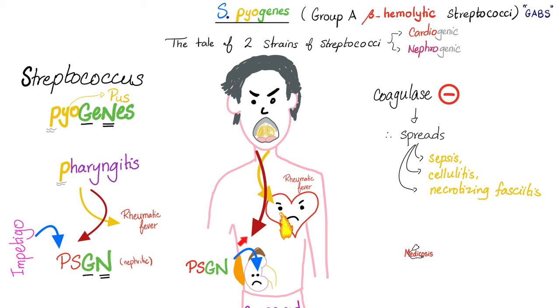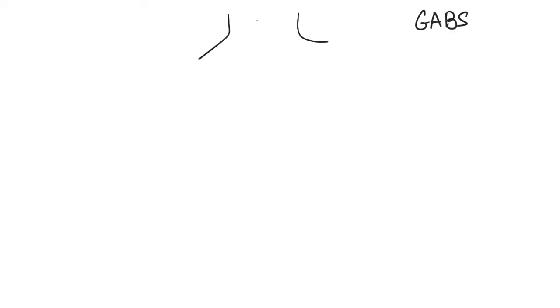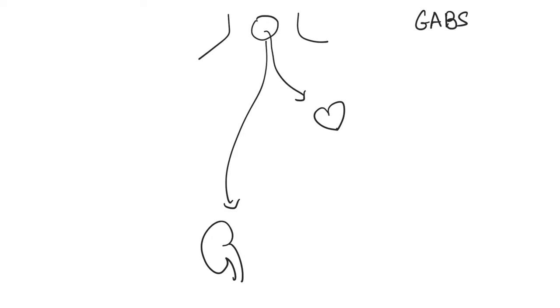However, if Streptococcus pyogenes causes a skin infection rather than pharyngitis, it is a different strain and can only trigger glomerulonephritis — never rheumatic fever. This is super important: if a patient has acute rheumatic fever, the previous infection was in the pharynx, not on the skin. Skin streptococcal infection can never trigger rheumatic fever, only glomerulonephritis.